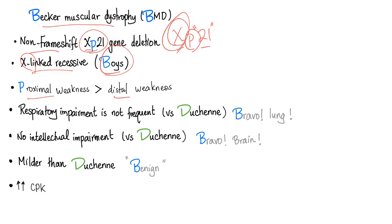Proximal muscle weakness is more common than distal muscle weakness. Respiratory impairment is present, but it's not as frequent as in Duchenne muscular dystrophy. There is no intellectual impairment — this is different from Duchenne, which does have intellectual impairment. Becker is milder than Duchenne; Becker is considered benign, in quotes. There is increased CPK because of muscle necrosis and calf pseudohypertrophy.